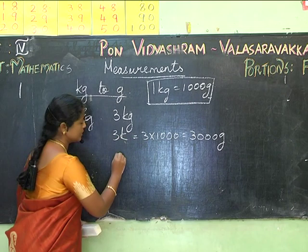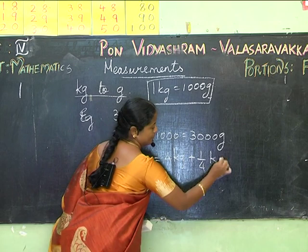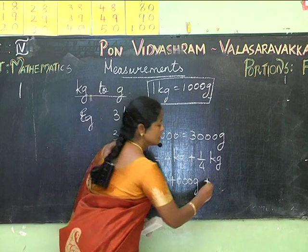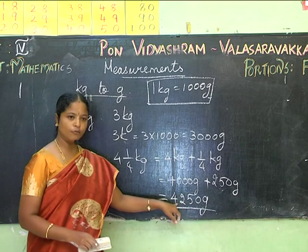Now, what is 4¼ kg? I can write it as 4 kg plus ¼ kg. Four kg equals 4 × 1000 = 4000 grams, and ¼ kg equals 250 grams. So 4¼ kg equals 4000 + 250 = 4250 grams.